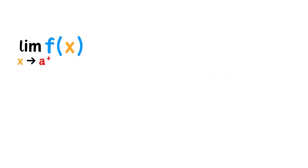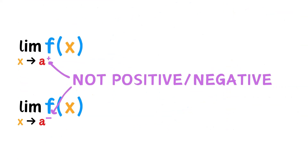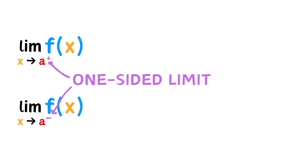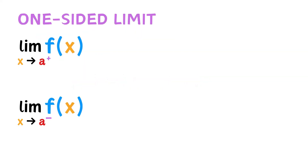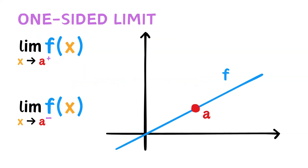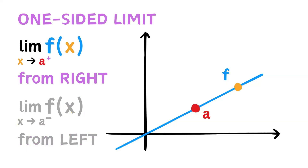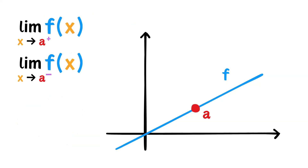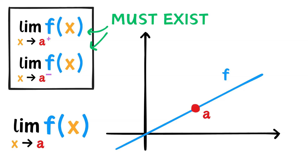If you see a limit whose target value has a plus or minus sign, this does not mean positive or negative. This means we are finding a one-sided limit. As the name implies, a one-sided limit is taken from only the left or the right. A minus sign tells us to find the limit from the left, and a plus sign is the limit from the right. For a limit to exist, the one-sided limits must exist and be equal.